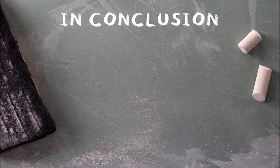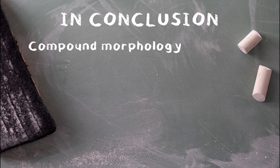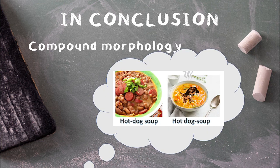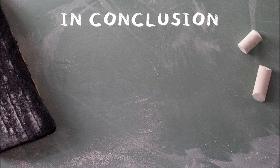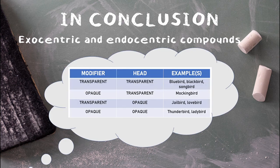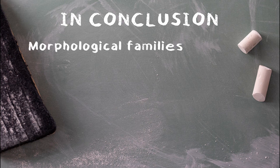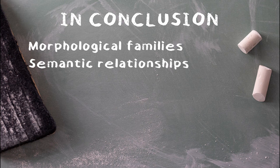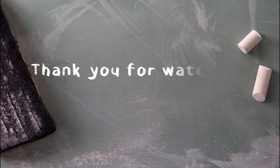In this video, we learned about compound morphology. We looked at the written form of compounds — how it can be widely variable, and how our perception of compounds is influenced by the written structure of the language. We also learned about compound meaning, looking at two compound types: endocentric and exocentric compounds, and discussed the idea of transparency. Lastly, we briefly touched on morphological families and the semantic relationships between compound constituents. Thank you for listening.